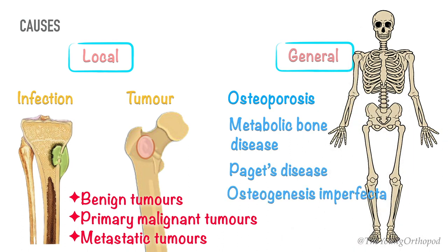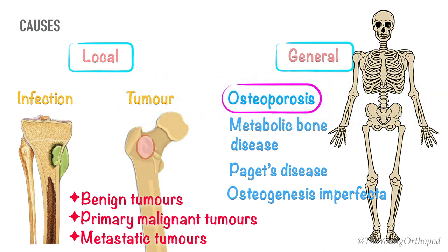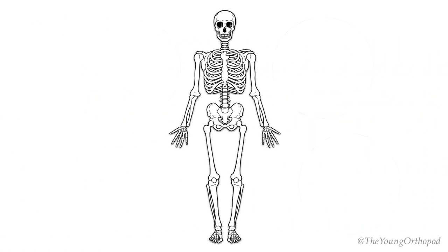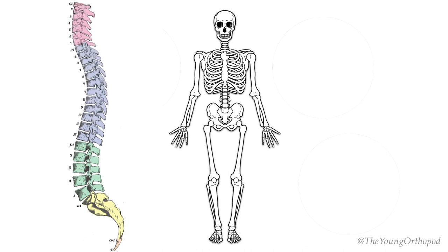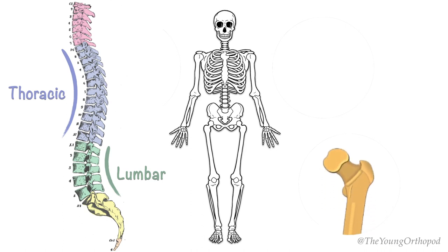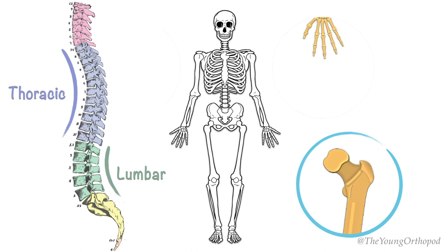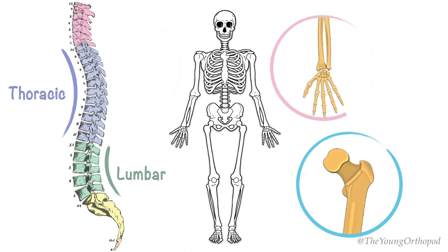Overall, the most common cause is osteoporosis, followed by metastasis. Pathological fractures are most common in the vertebral bodies of the thoracic and lumbar region. The next most common sites include corticocancellous junctions of long bones, like the proximal femur and lower end of the radius.